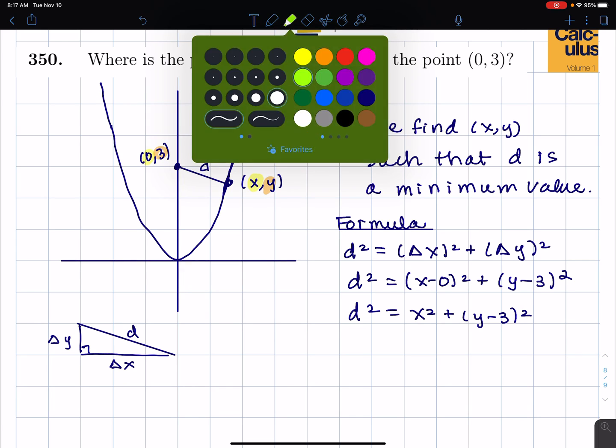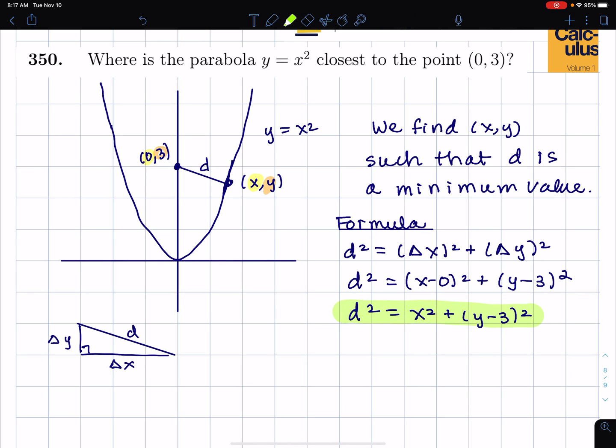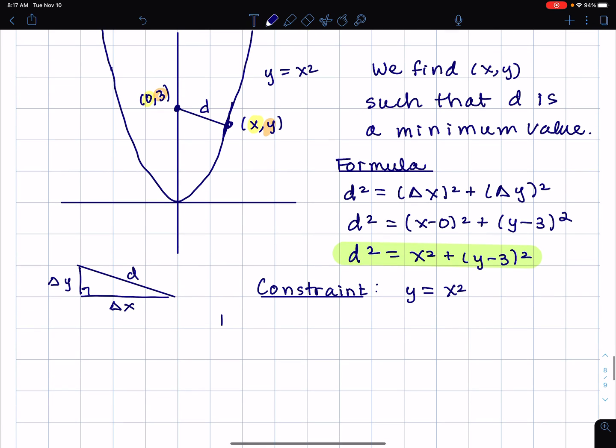And the next step is I'm going to write down a constraint. If I wanted to find x and y to make d minimum I could just make x zero and y equals 3 but there's a constraint - these are also called constraint problems. The constraint is that y equals x squared, so then we use that to eliminate a variable.